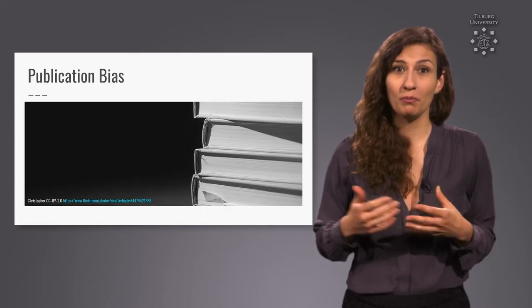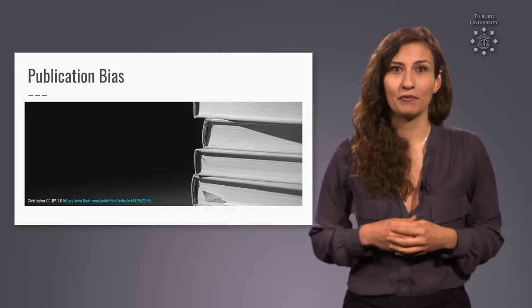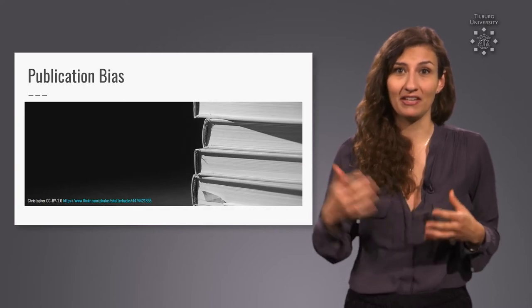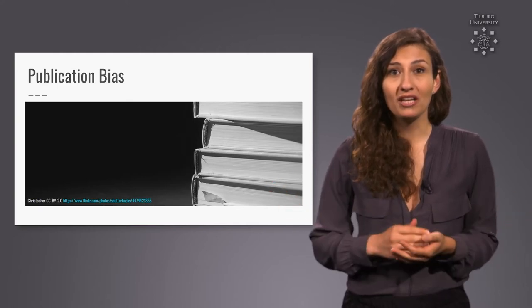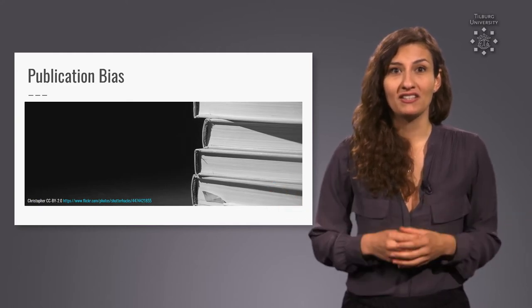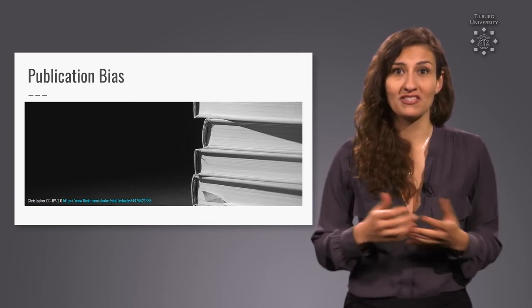There's one important problem we have to consider, publication bias. Publication bias refers to the tendency for experimental evidence to be published and made available to the public only if it shows a result that is exciting or intriguing or fulfills certain statistical criteria.